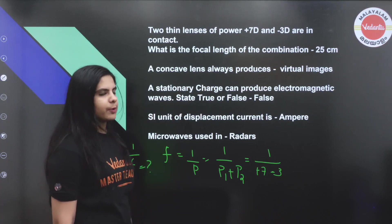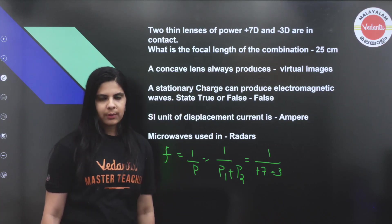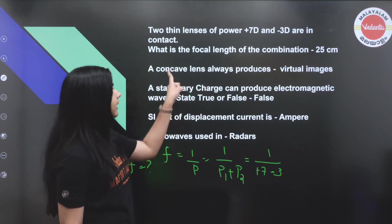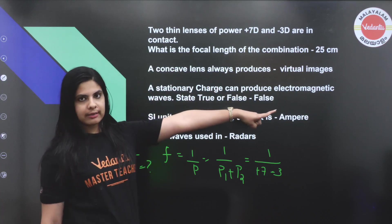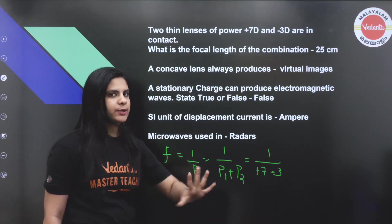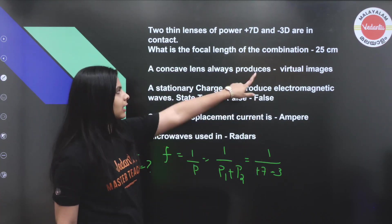A concave lens always produces a virtual image — in any position, the image formed is virtual.